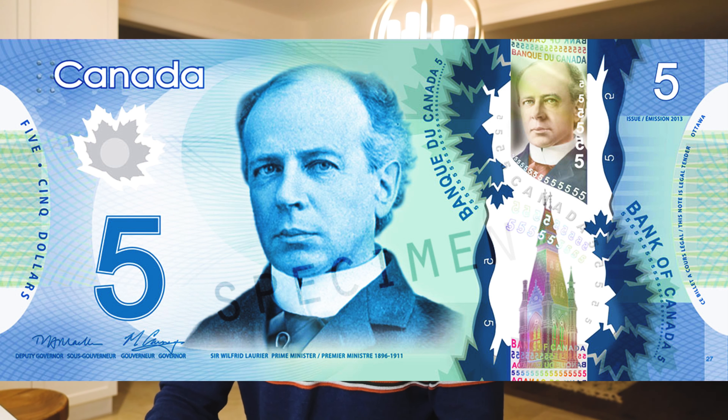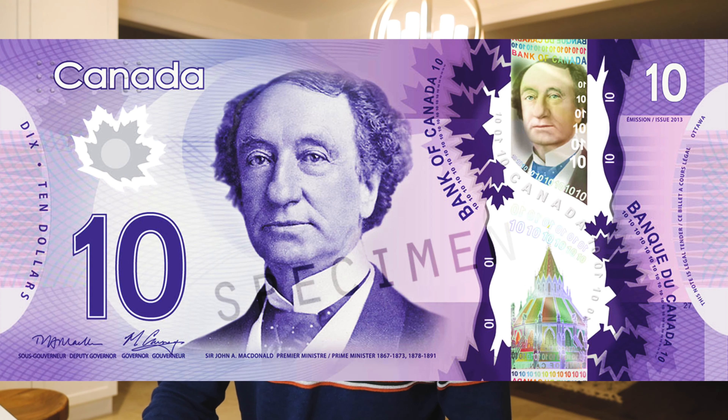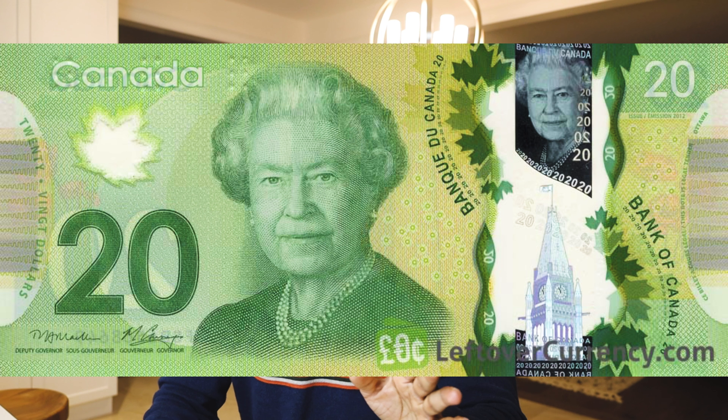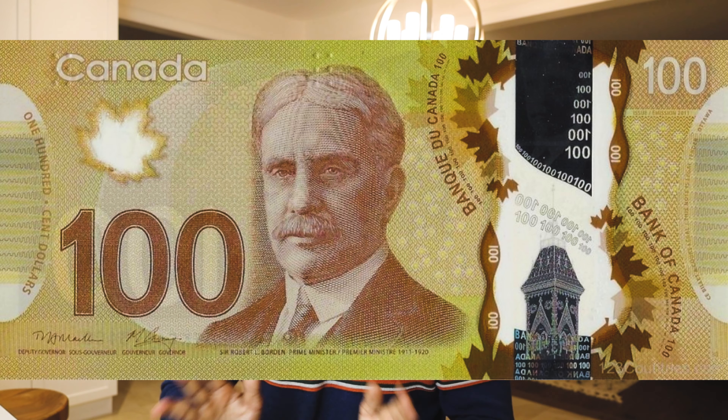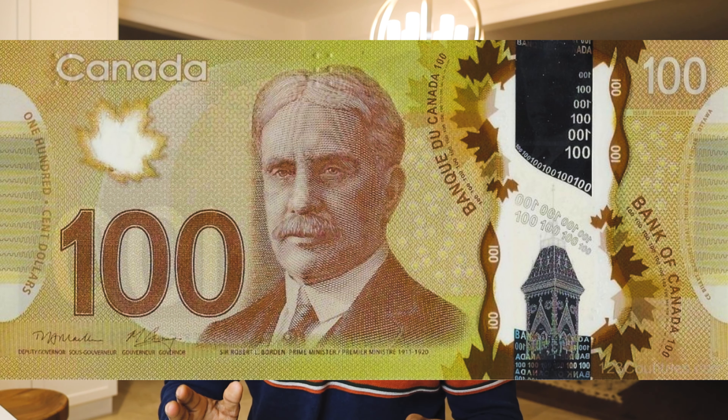In Canada, the denominations are $5, $10, $20, $50, and $100. The maximum denomination is $100. You can use $100, $50 for transactions. For large transactions over $100, you can use card payments.